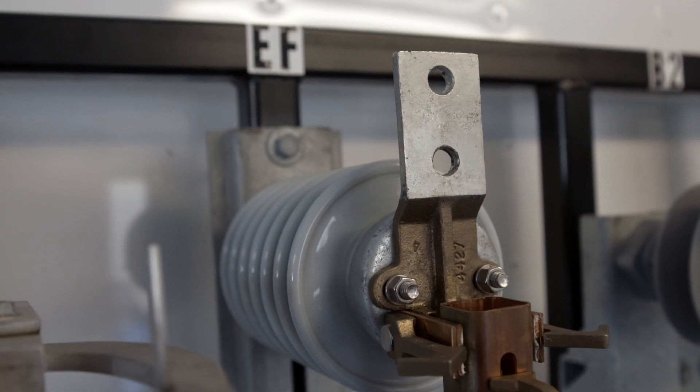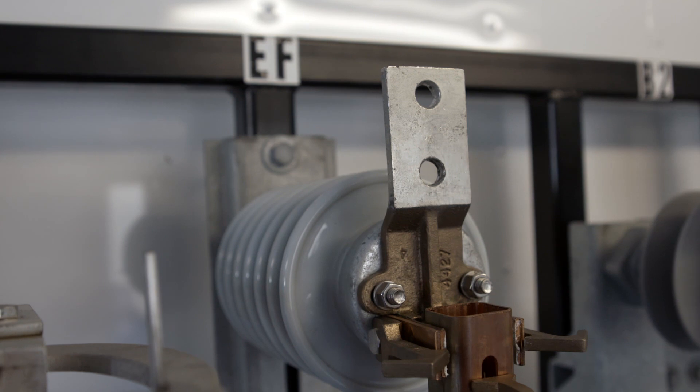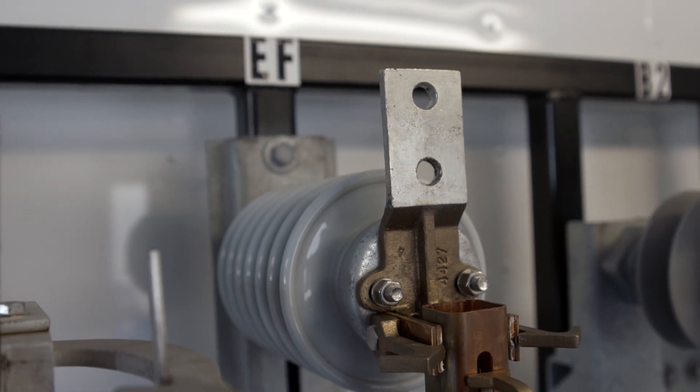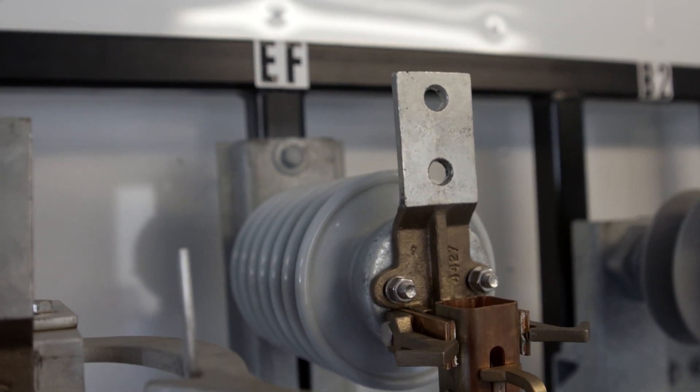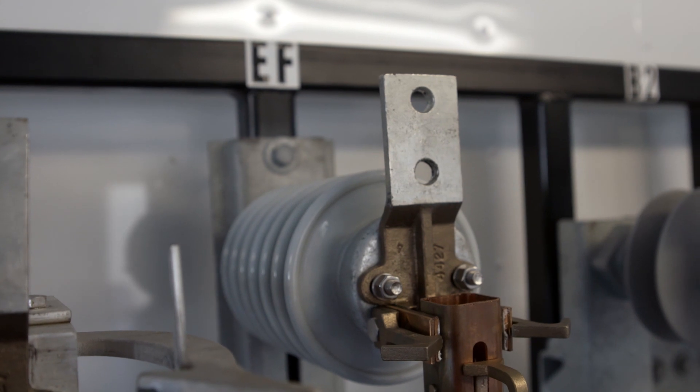The under hung distribution switches can be used for switching transformer magnetizing current, line charging current and loop switching as well as emergency load dropping.